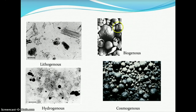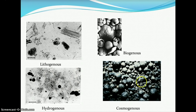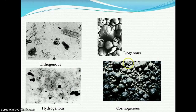Biogenous sediments — these are pictures of foraminifera, which we'll look at in lab. Here is hydrogenous sediment precipitated out of seawater, and here you can see the darker coloration of cosmogenous sediment from meteorites.